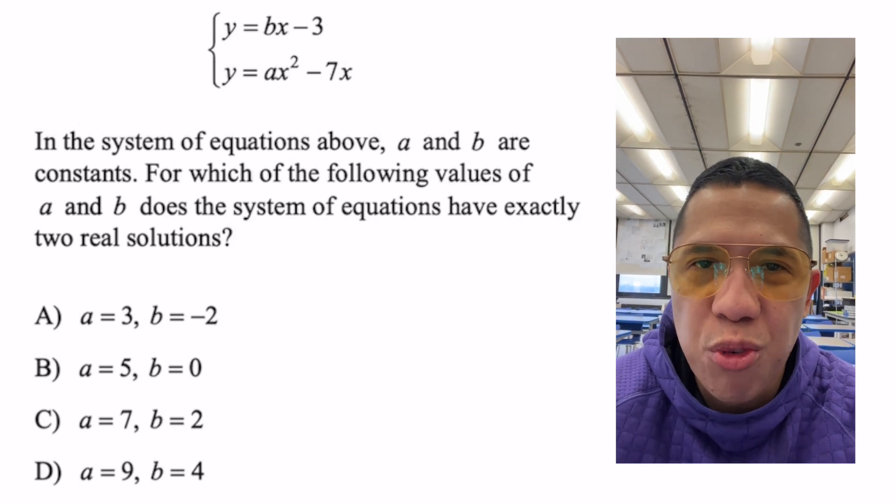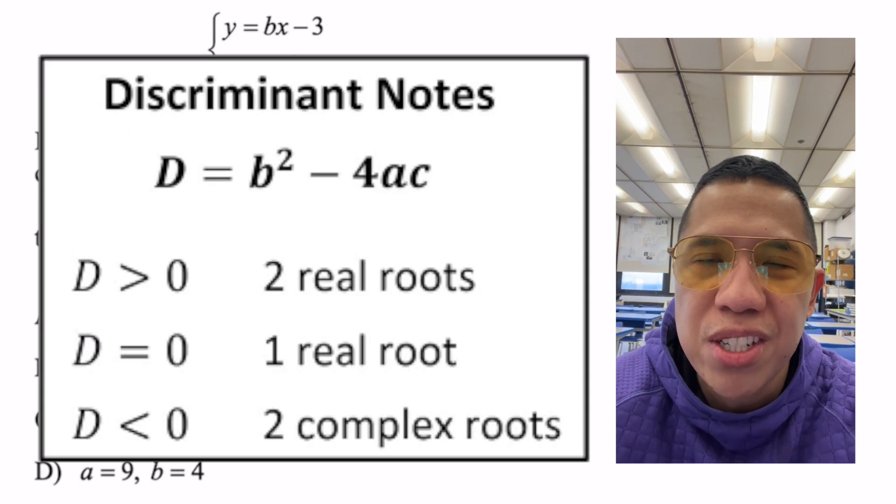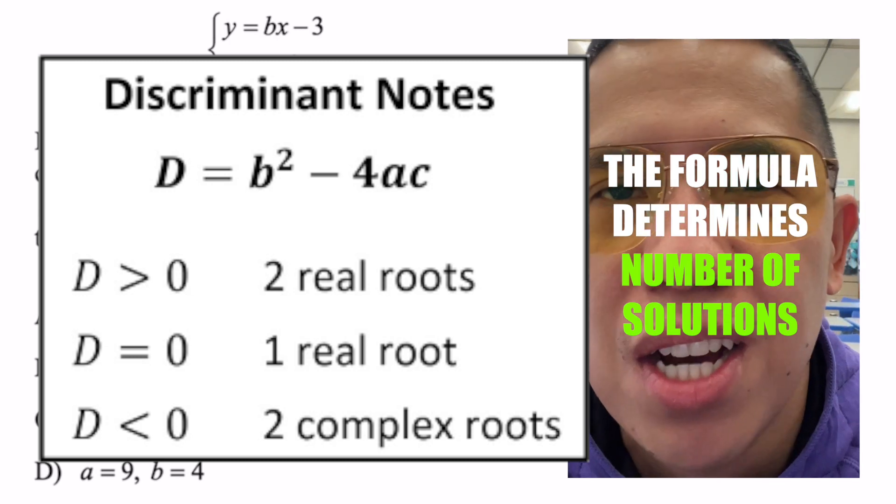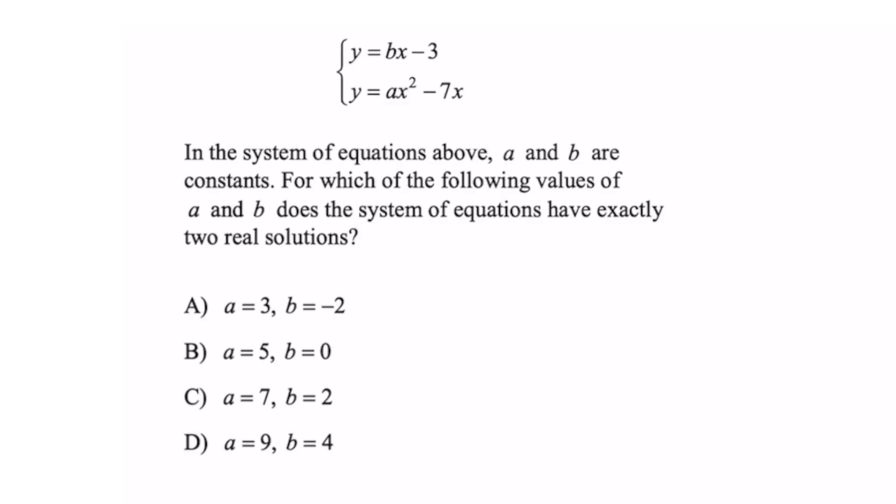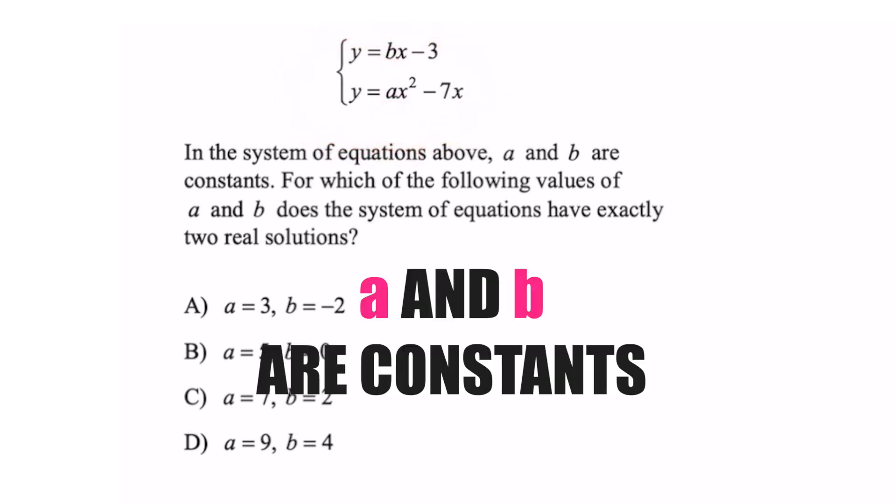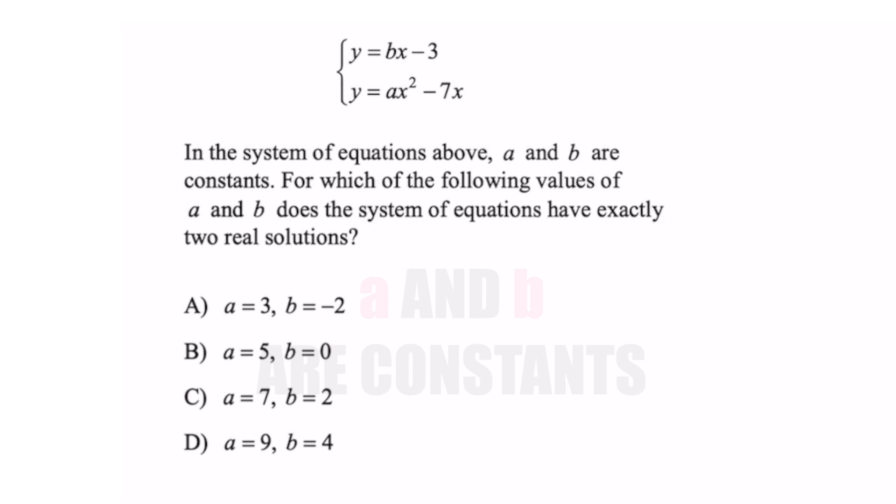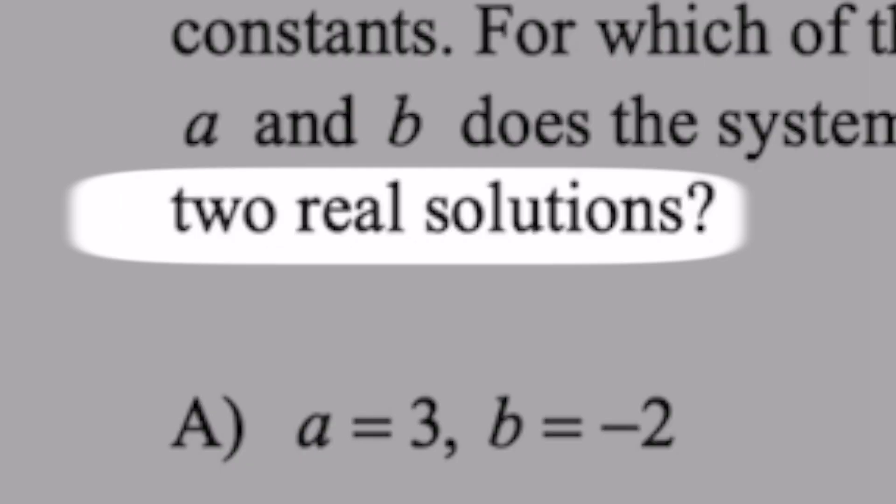For this question, you're going to have to know the discriminant formula, and that formula determines how many solutions a quadratic equation will have. Let's go ahead and apply that to this question. We got a system of equations above where a and b are your constants. For which of the following values of a and b does the system of equations have exactly two real solutions?